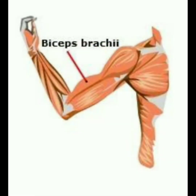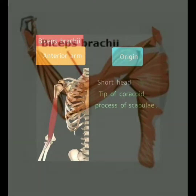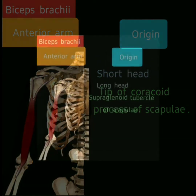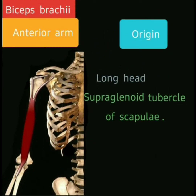Welcome to my new video. In this video I will discuss the anatomy of biceps brachii muscle. The origin of the short head of biceps brachii muscle is from the tip of the coracoid process of the scapula. The long head of biceps brachii muscle originates from the supraglenoid tubercle of the scapula.